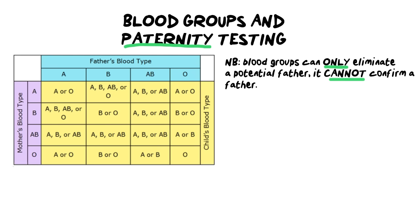Just because a potential father is blood group A and the child is blood group A doesn't automatically mean that is their child. It just so happens that they have the same blood group, but that doesn't necessarily mean that's their child. You've got to take into consideration what the mother's blood group was, and also that there's potentially a different father with the same blood group.